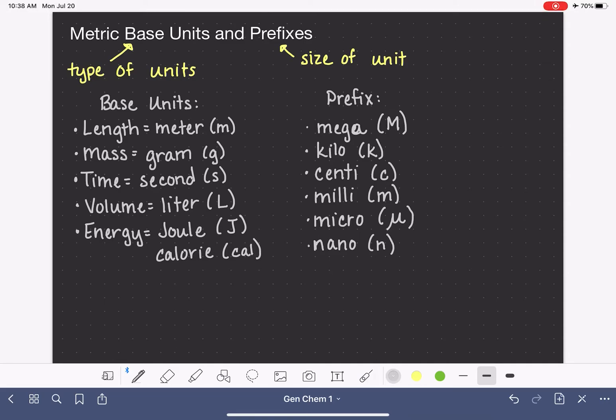In terms of what each of these prefixes represent, mega represents 10 to the 6, which is 1 million. Kilo represents 10 to the 3, or 1,000. Centi represents 10 to the negative 2, which is the same as 1 hundredth. Milli represents 10 to the negative 3, which is 1 thousandth. Micro is 10 to the negative 6. And nano is 10 to the negative 9.